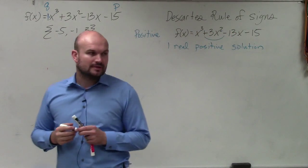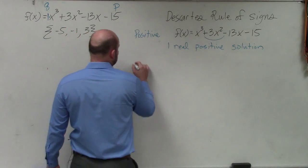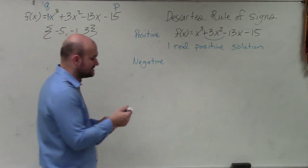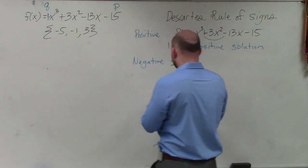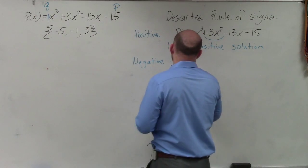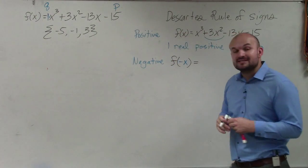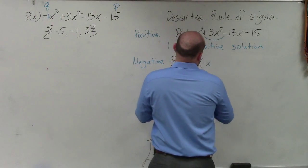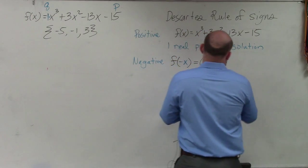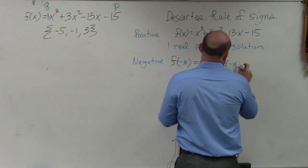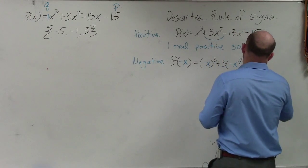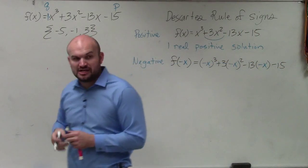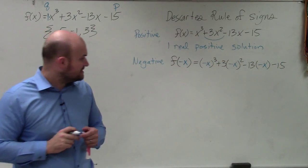OK, is that it? Nope. Now we've got to figure out how many negatives there are. So to find the negatives, you're not going to use f of x. You're going to now figure out what is f of negative x. So now, instead of using x, I'm going to replace negative x.